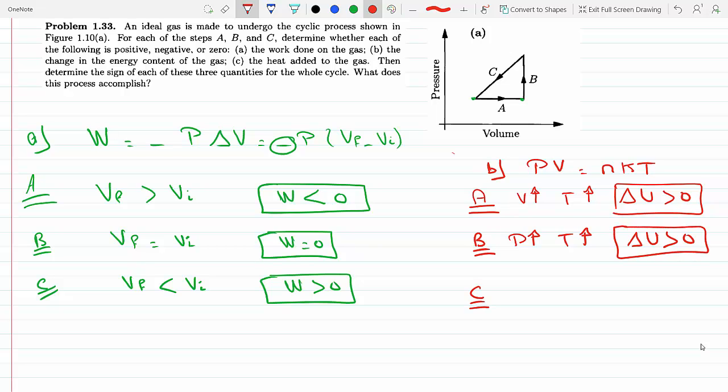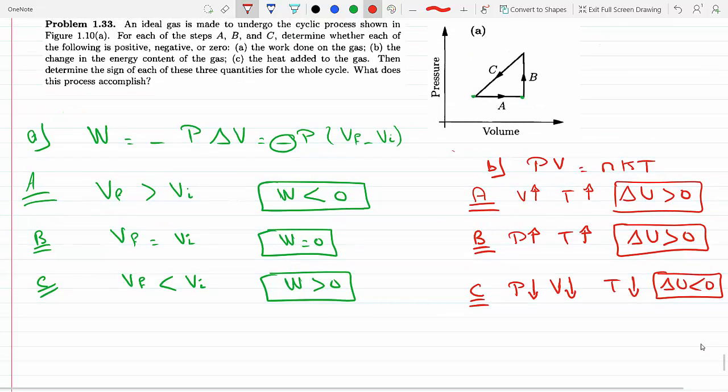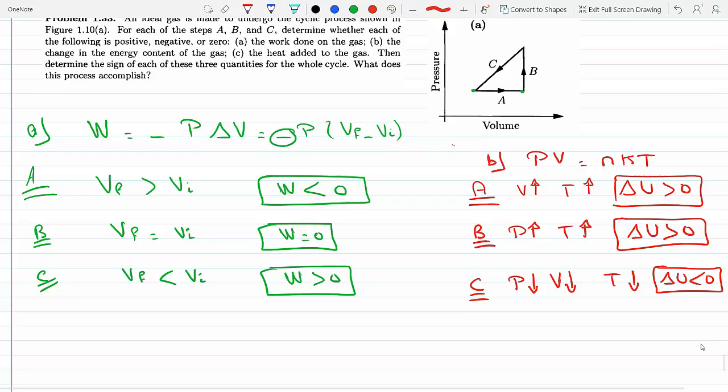In step C, the pressure goes down and the volume goes down because the line slants downwards, which means the temperature would go down, and if the temperature goes down, that means delta U will be less than zero for C. Negative.